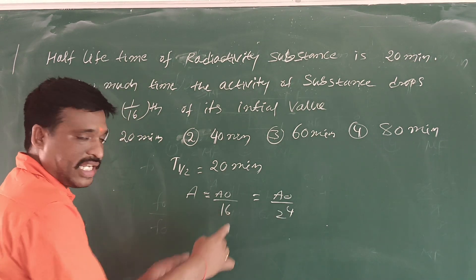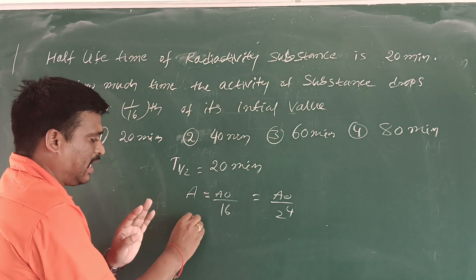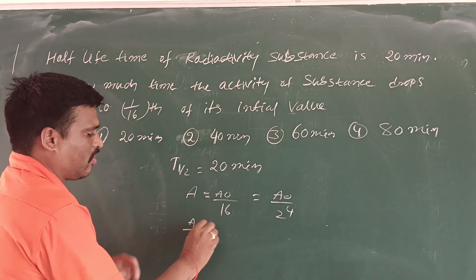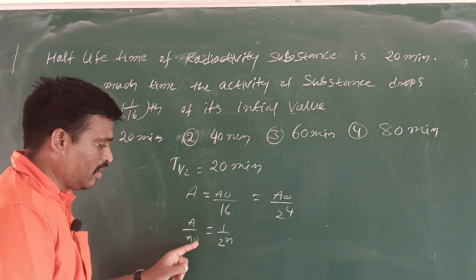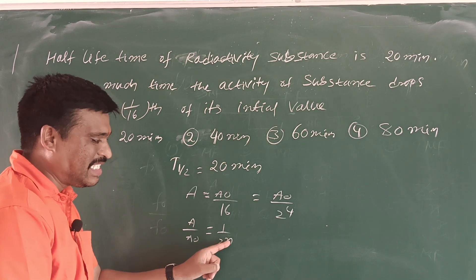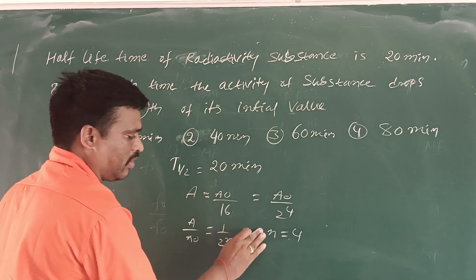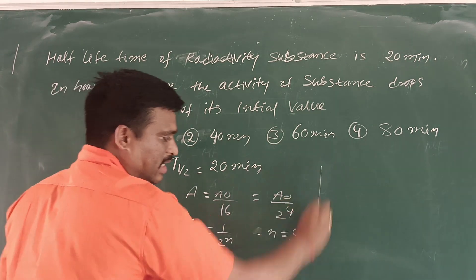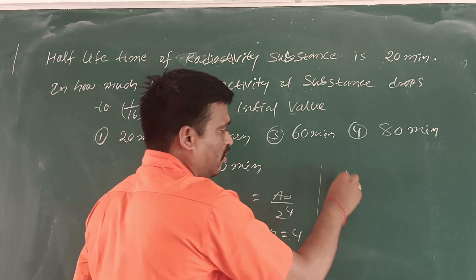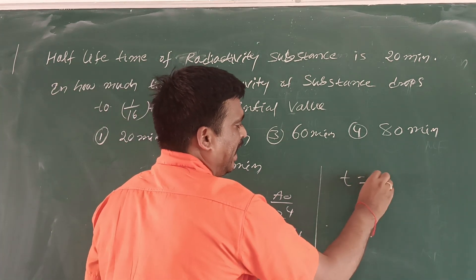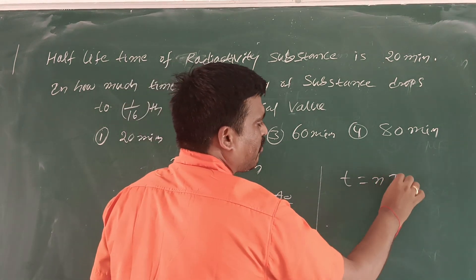2 power 4. 16 can be written as 2 power 4. So, A by A₀ is equal to 1 by 2 power n. So n is equal to 4. Asking time: how much time is taken to reach its initial value? Now, t is equal to n into half-life time.